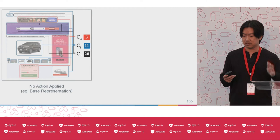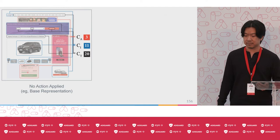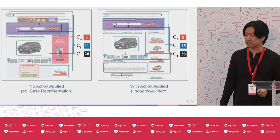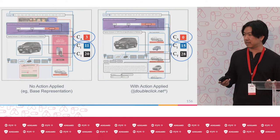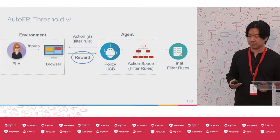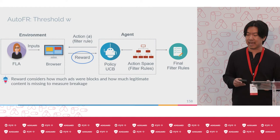We repeat what the filter list author did before: we know the base representation of the site — without any action applied, what are the counters we expect. Then we compare them when the action is applied. When we apply doubleclick.net, what happens to those three counters? We can see that ads went down to zero, which is good. We also compare the numbers of images and text, which can change because of site dynamics or because of the rule.